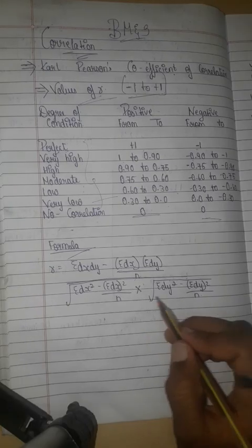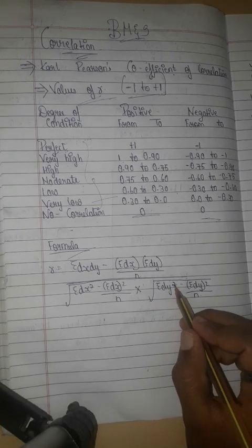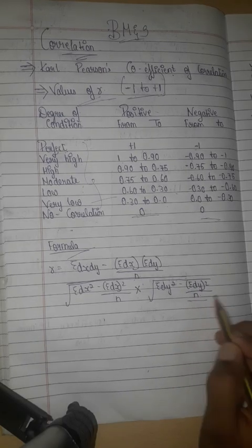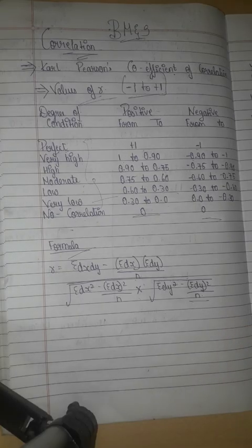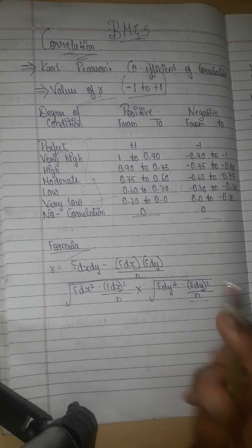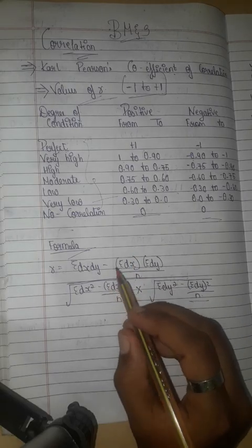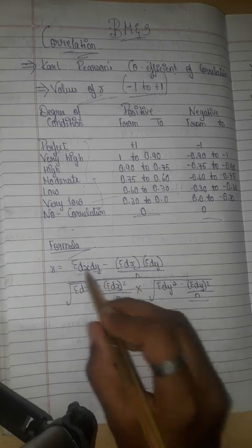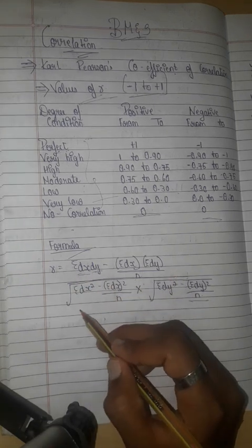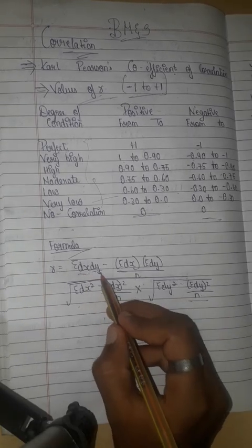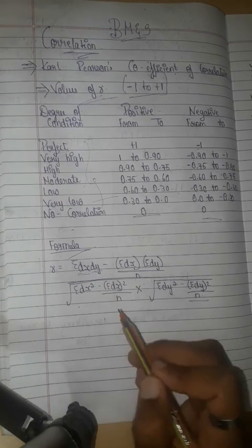The formula involves: sigma dx dy divided by n, into root of sigma dx squared minus sigma dx whole squared divided by n, and sigma dy squared minus sigma dy whole squared divided by n. We need to find dx squared, dy squared, and dx into dy, to get the final answer.